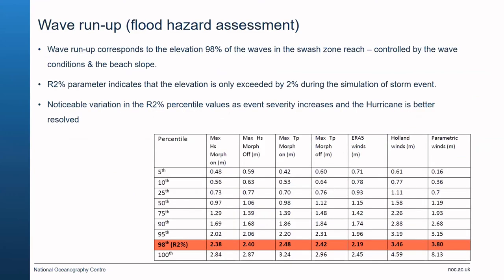We can also look at wave run-up — the water level elevation that waves reach 98 percent of the time in the swash zone — controlled by both wave conditions and beach slope. The R2% parameter is the elevation exceeded by only 2 percent of waves during the simulated storm event. Across all the different scenarios there is quite a variability in R2% values, linked to event severity but also the improved resolution of the hurricane.